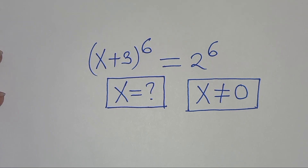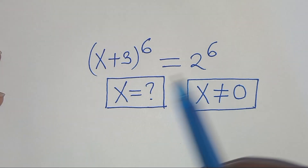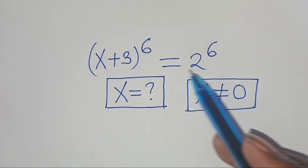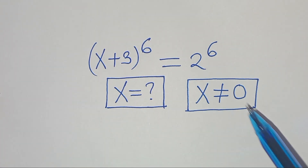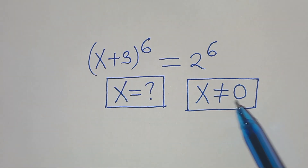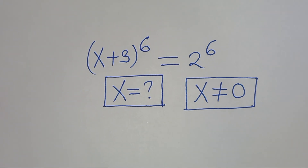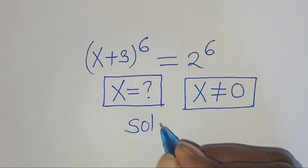Hello everyone, you're welcome to solve this nice algebra problem which is x plus 3 raised to the power of 6, equal to 2 to the power of 6. What are the values of x, given that x is not equal to 0? So let's present the solution to this problem.